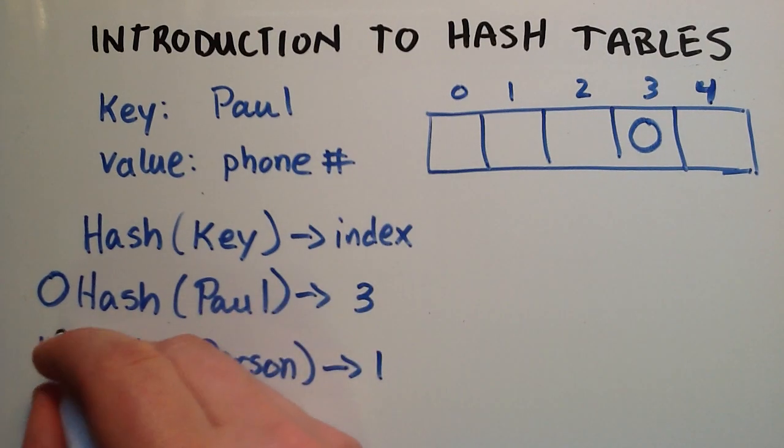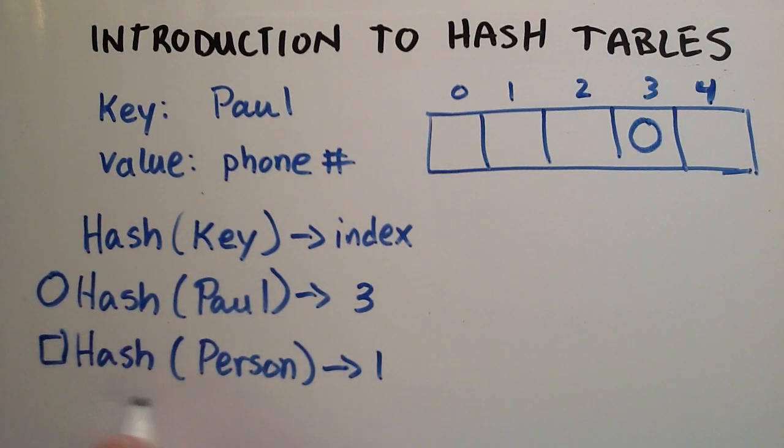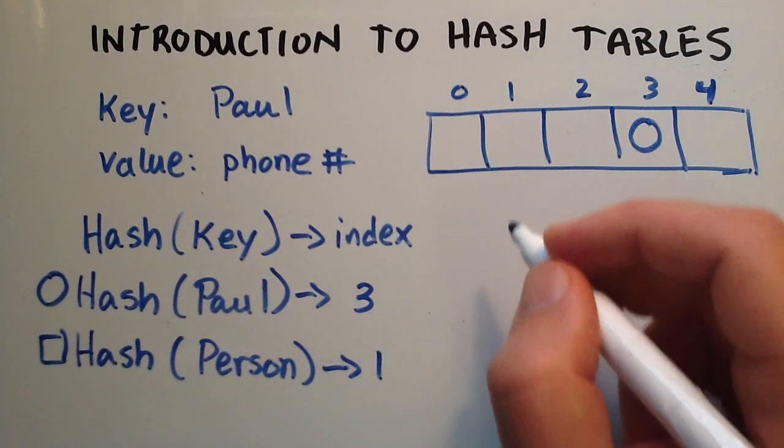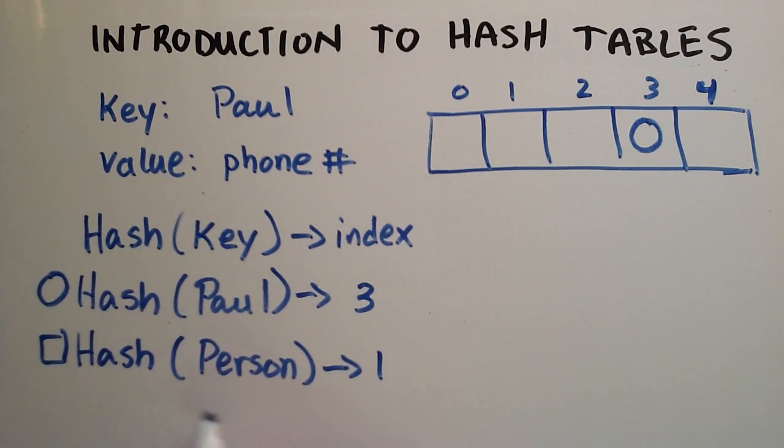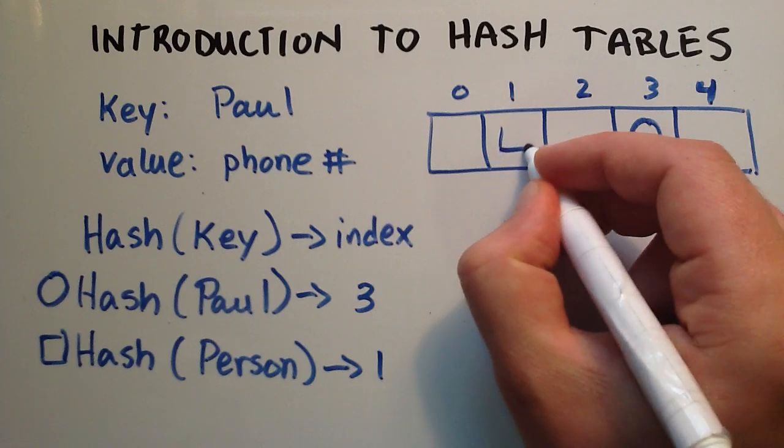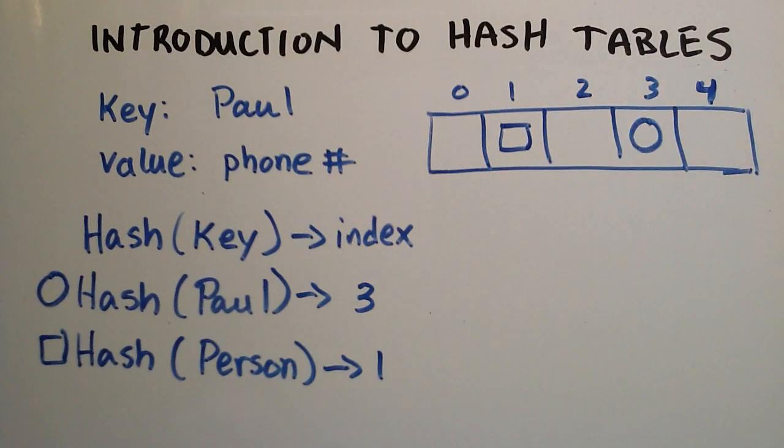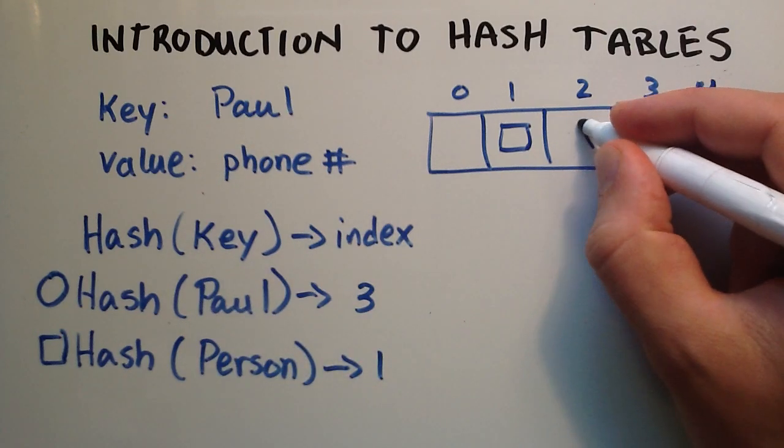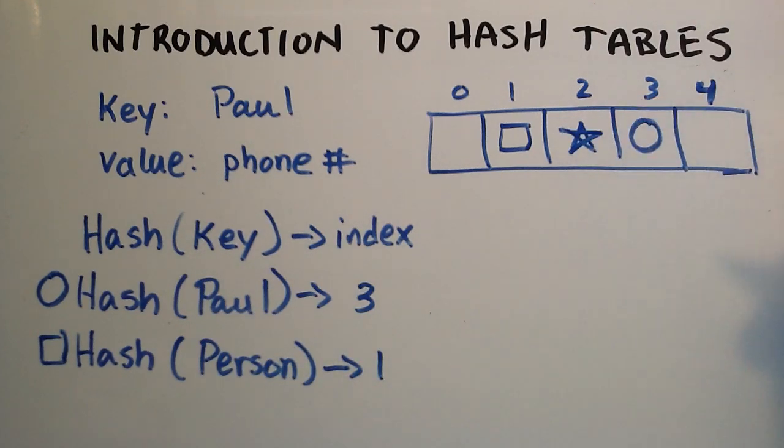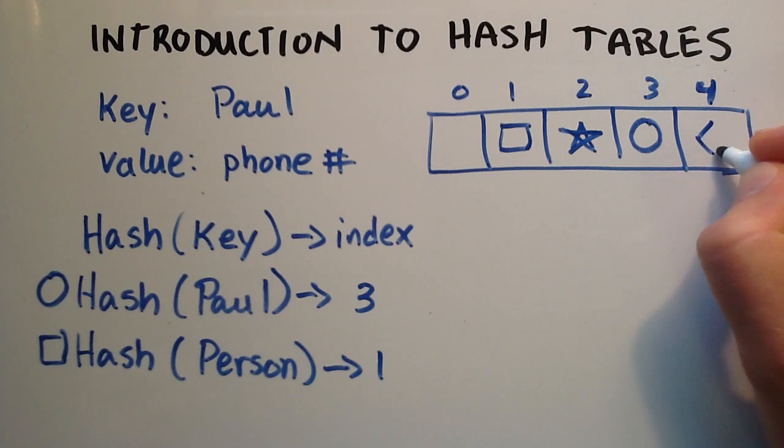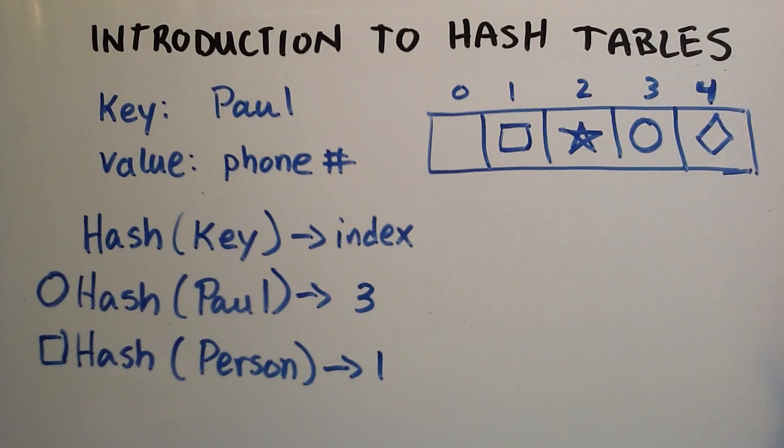So person can be square, I guess. So this square will represent some other person's name and phone number, and according to our hash function, we're supposed to place that in index 1. So we could keep on going, and maybe we'd find another person's hash value goes in index 2, and maybe another one, that can be a diamond, that will represent another person's name and phone number, and we find that they go in index 4.